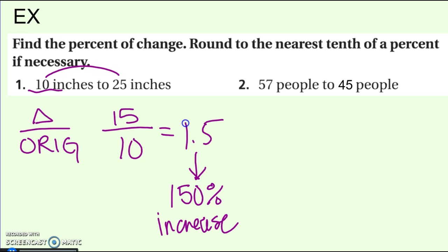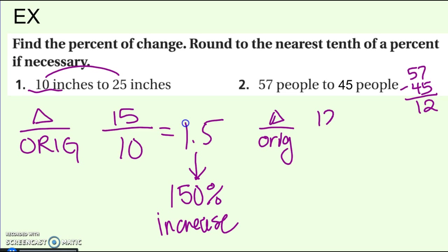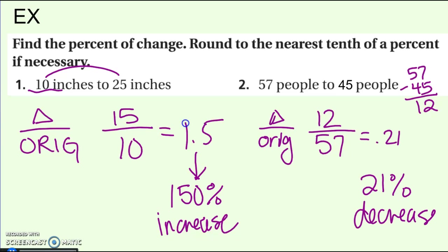Number two: going from 57 people to 45 people. Start with your formula — write that down first. How much did it change by? It dropped by 12 people, but I leave it as a positive number, so the change is 12. The original is 57 — sometimes you have to read carefully to find which number came first. Divide that and you get approximately 21%. Because it dropped or decreased, it's a 21% decrease.